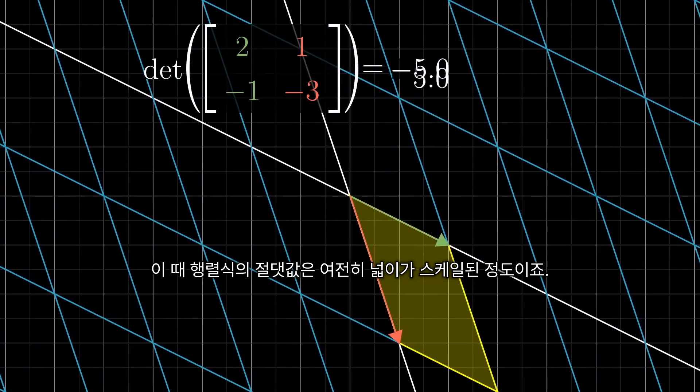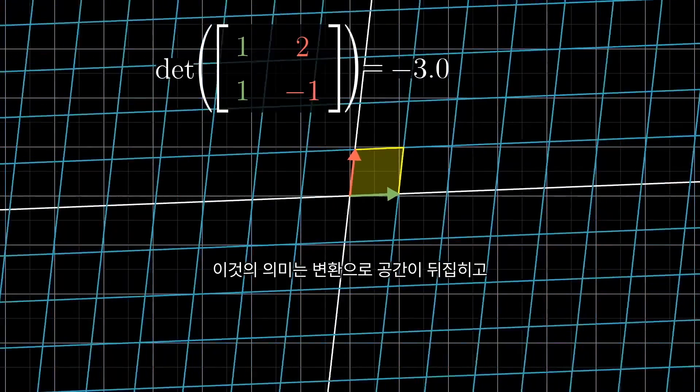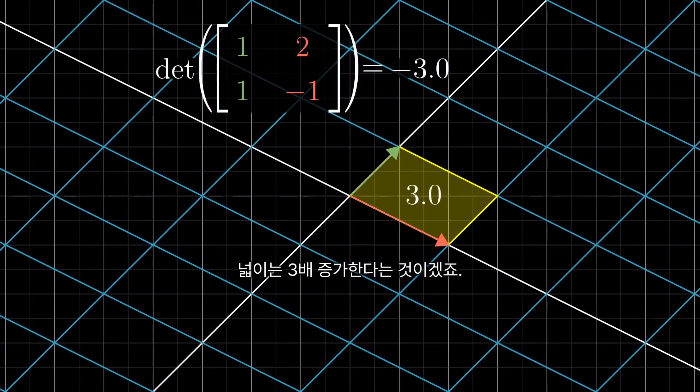The absolute value of the determinant, though, still tells you the factor by which areas have been scaled. For example, the matrix with columns 1, -1 and 2, -1 encodes a transformation that has determinant, I'll just tell you, negative 3. And what this means is that space gets flipped over and areas are scaled by a factor of 3.